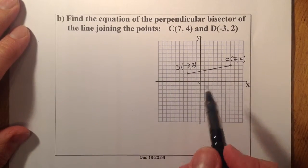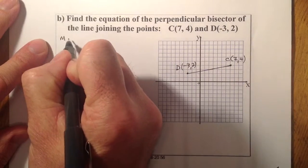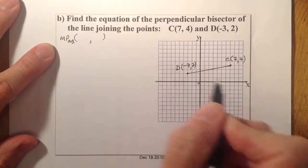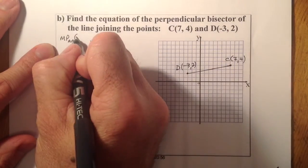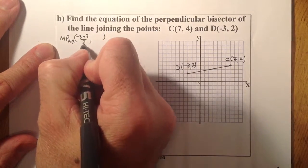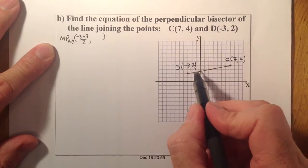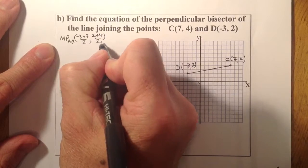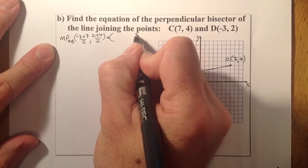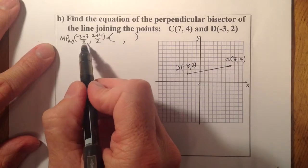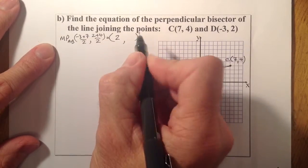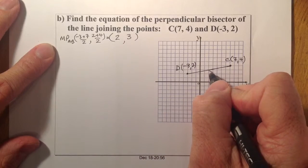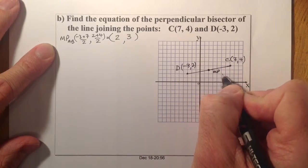Let's find the midpoint of CD. I'm going to add the x-coordinates together: minus 3 plus 7 divided by 2. And add the y-coordinates: 2 plus 4 all over 2. That gives 4 divided by 2 equals 2, and 6 divided by 2 equals 3. So the midpoint is (2, 3).